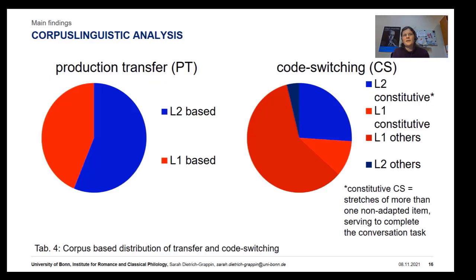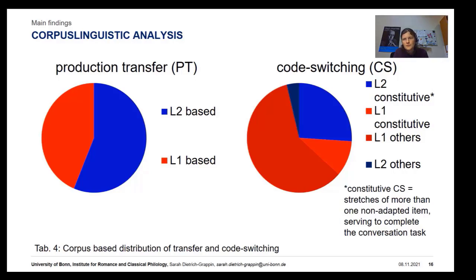Speaking of the corpus-linguistic analysis, production transfer was generally more L2- than L1-based, even in the case of fewer typological similarity — that is to say, between L2 English and L3 French. Also in this case, pupils drew on their L2 English. Also, constitutive code switching, which may be considered as stretches of borrowings for more than one word, was rather L2- than L1-based.